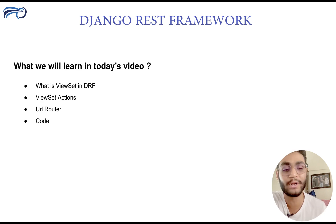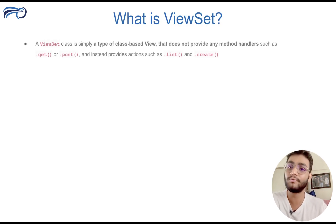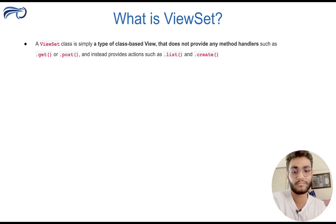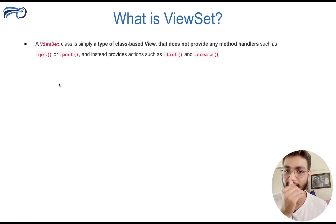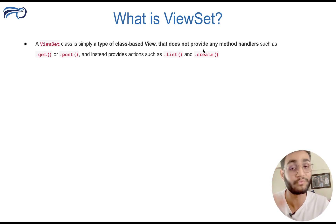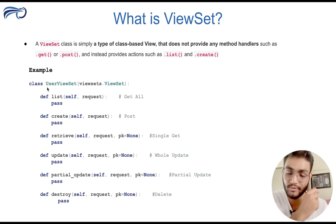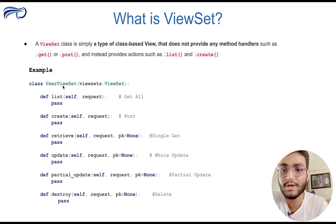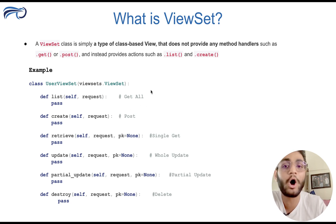Let's first understand what is ViewSet in Django REST Framework. The ViewSet class is simply a normal base type of class-based view. Till now what we used to do was write get method, post method in the class-based view, but in ViewSet we don't write get and post methods — instead we write list method, create method. There are different types of methods that ViewSet provides us. As you can see, we have defined a UserViewSet which has been inherited from ViewSet. It provides six different methods — the first one is the list method, which is used to get all the data from the database.